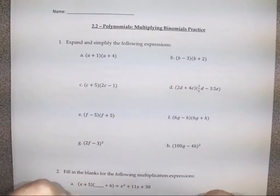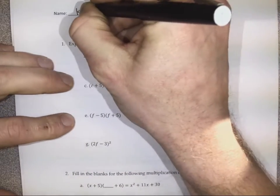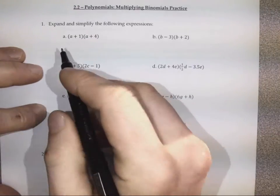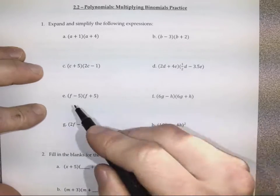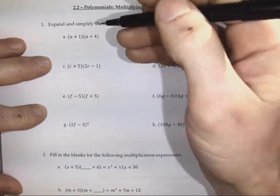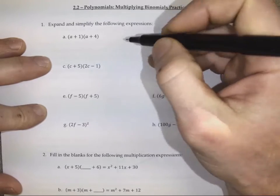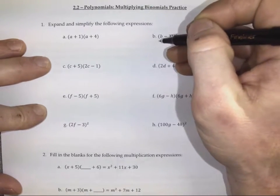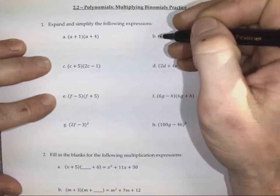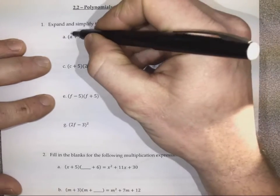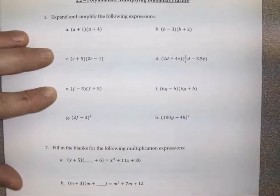Let's go over the solutions to our practice for multiplying binomials. So we start out pretty straightforward. What I'm going to try to do is, for each of these questions, try to switch up our strategy a little bit — talk about different methods. So if you don't like one method I use for maybe A, you can watch along and maybe B, I'll use a different method that makes more sense to you. You can choose one that makes sense, as long as you're able to successfully get to the answer. They're all valid.